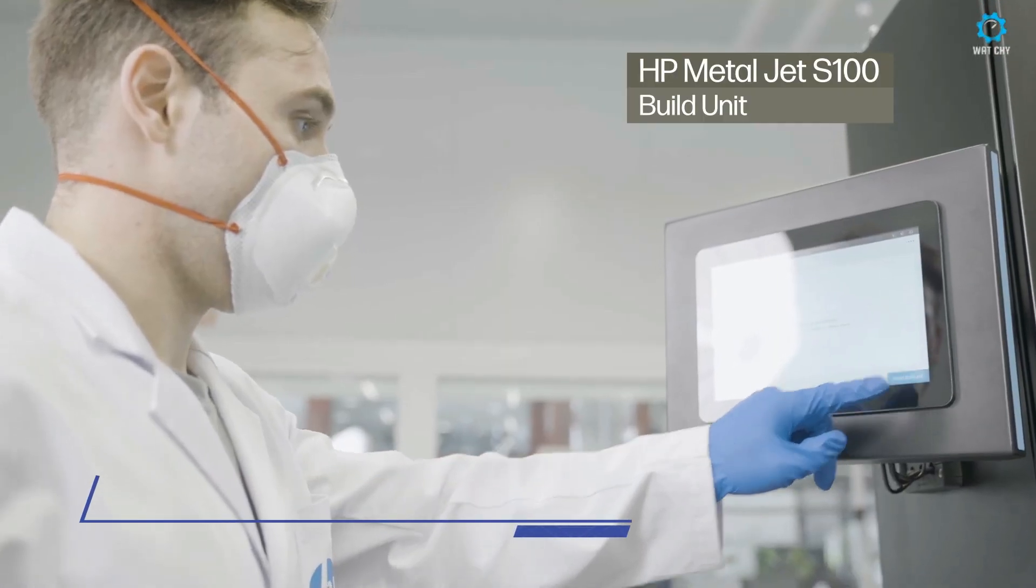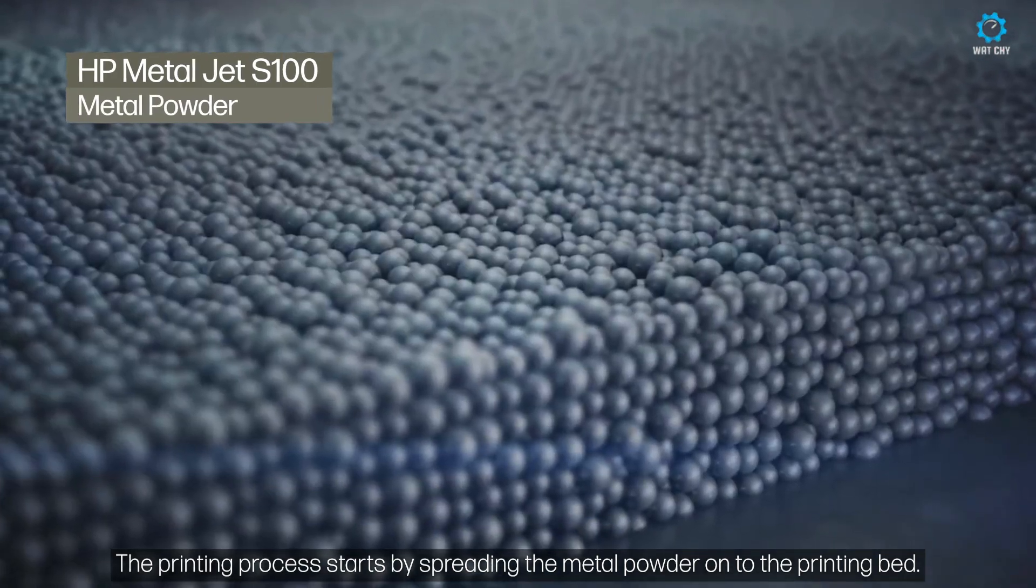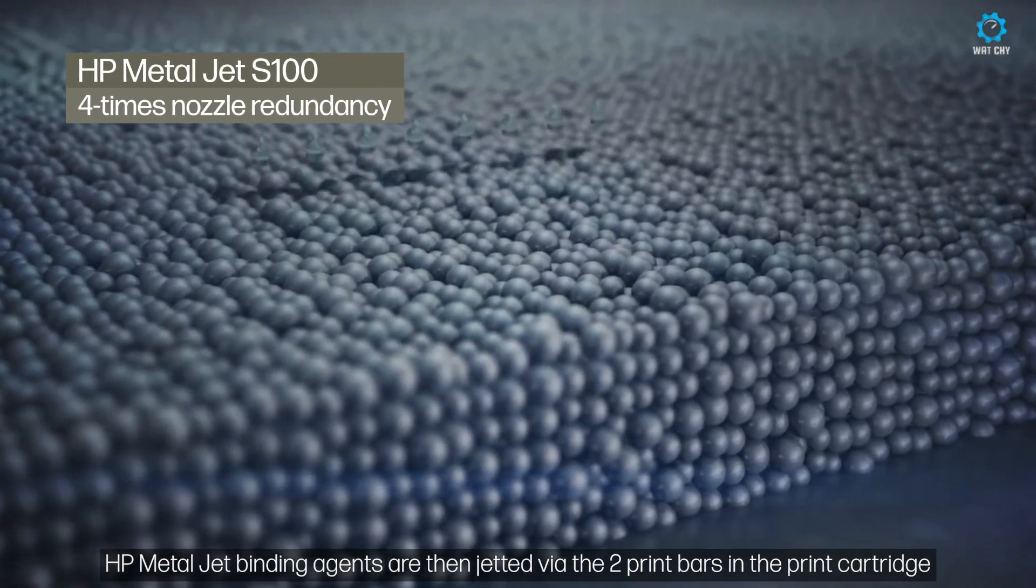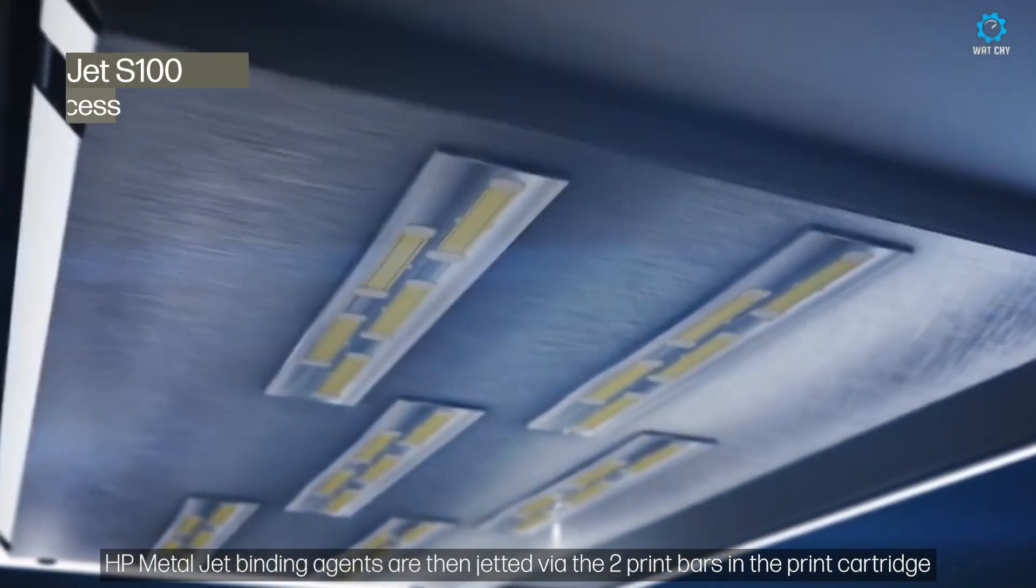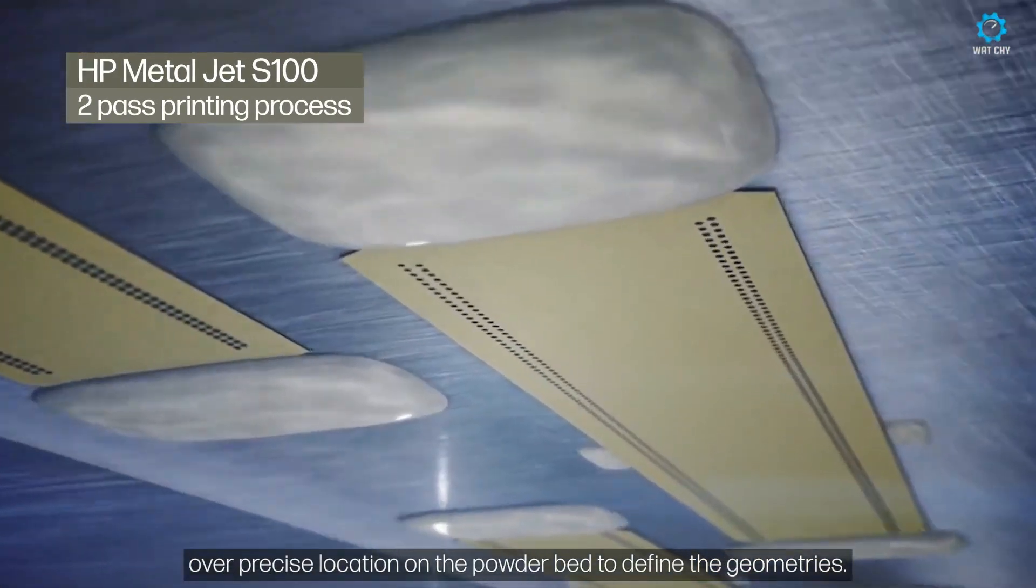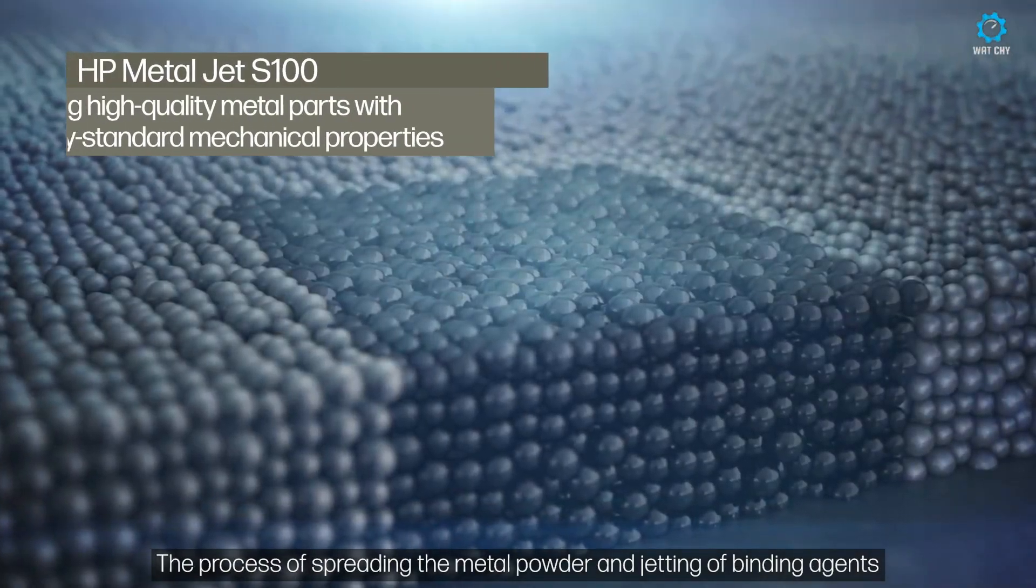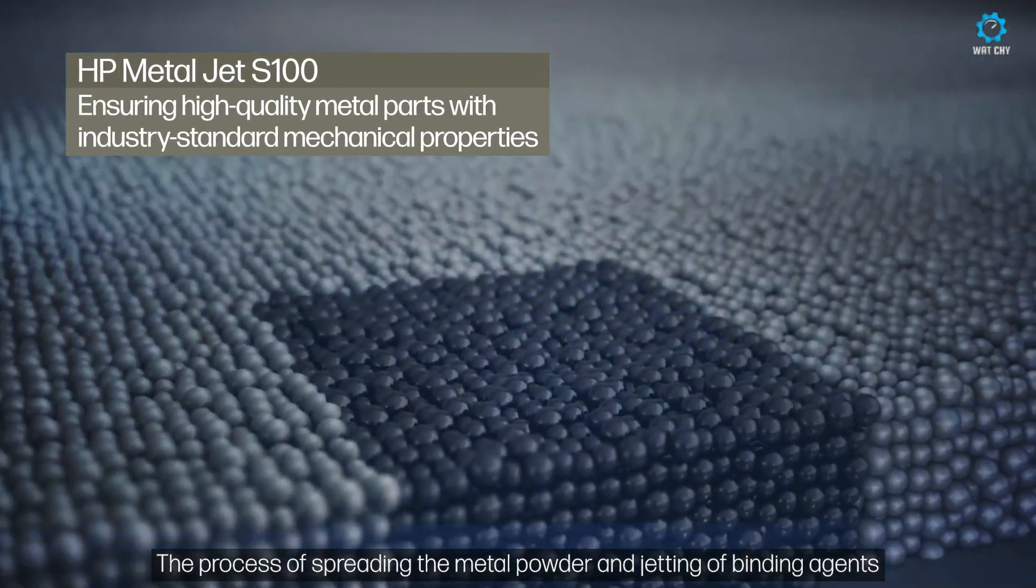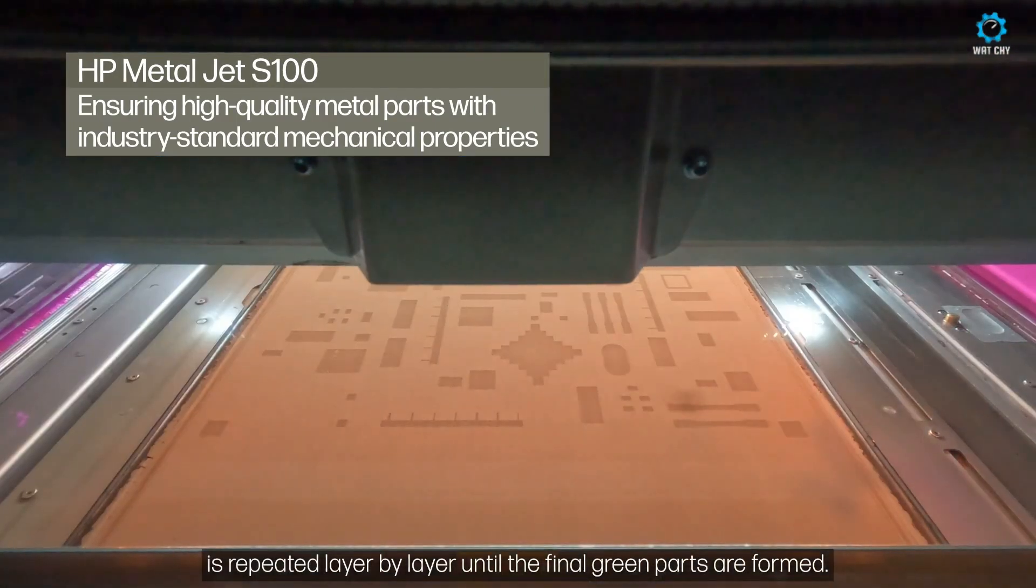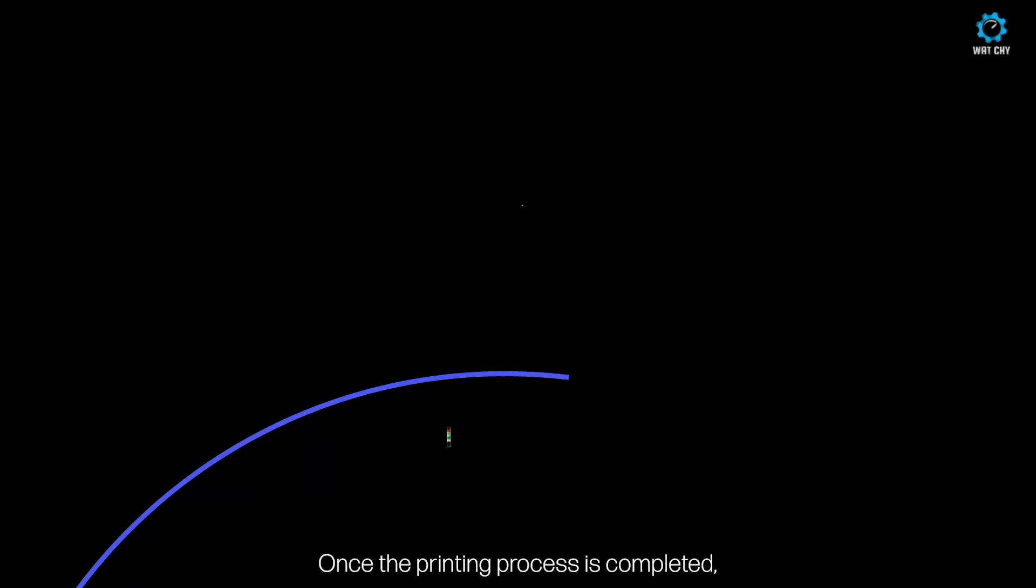The HP Metal Jet S100 is a cutting-edge metal 3D printer that utilizes binder jetting technology to deliver high-speed, high-volume production of metal parts. Binder jetting works by selectively depositing a liquid binder on layers of metal powder, fusing them together to form a solid part. The S100 offers several advantages over traditional metal 3D printing methods, such as faster print speeds, lower cost per part, and the ability to produce large batches of parts in a short amount of time.